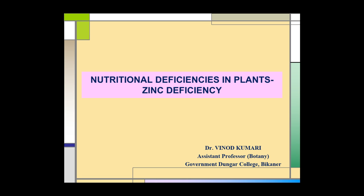Nutritional Deficiencies in Plants. Today we are going to study about Zinc Deficiency in Plants. The main points we will discuss in this e-lecture are: 1. The essential role of zinc in plants, 2. Main deficiency symptoms, 3. How soil conditions affect zinc availability to plants, and 4. Management strategy — how we can control zinc deficiency in plants.